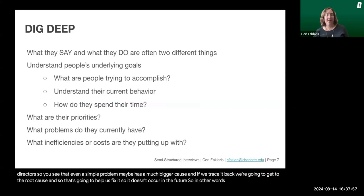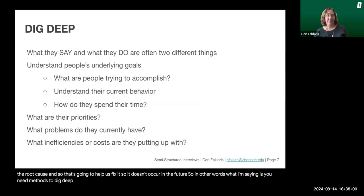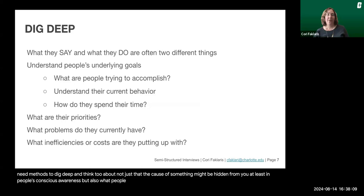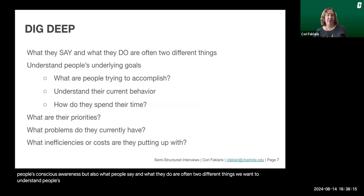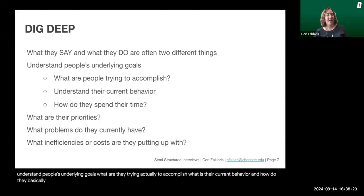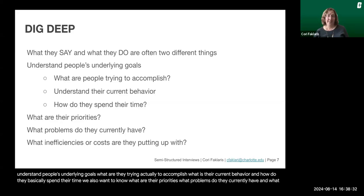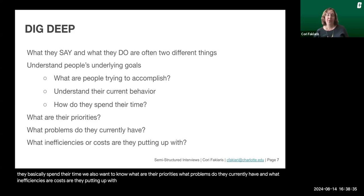In other words, you need methods to dig deep. Think too about not just that the cause of something might be hidden from you — at least in people's conscious awareness — but also what people say and what they do are often two different things. We want to understand people's underlying goals: what are they actually trying to accomplish, what is their current behavior, and how do they spend their time? We also want to know their priorities, what problems they currently have, and what inefficiencies or costs they're putting up with — which can result in workarounds that impact security and privacy.